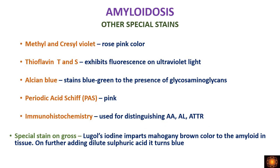Other special stains that can demonstrate amyloid include: methyl violet and crystal violet, which give a rose-pink color; thioflavin T and S, which exhibit fluorescence under ultraviolet light; Alcian blue, which gives a blue-green color; periodic acid-Schiff (PAS) stain, which gives a pink color. Immunohistochemistry is specifically used to demonstrate which type of amyloid is deposited — whether AA, AL amyloid, or transthyretin.